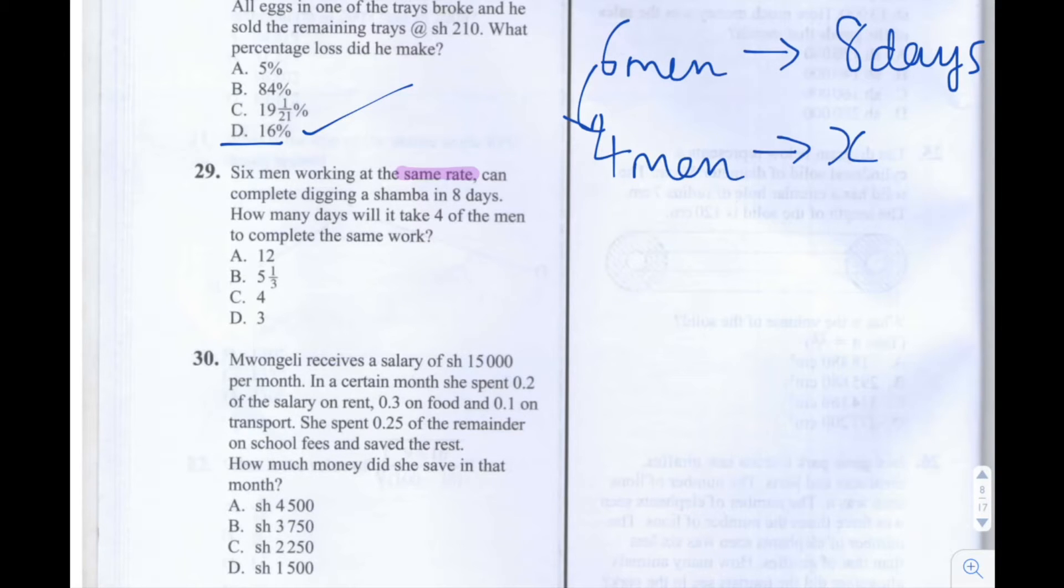Going from six men to four, we times by four and we divide by six. So that's how we go from six to four. From that we can use that information, this number here, to work out how to go from eight days to X days.